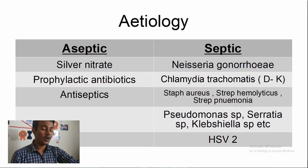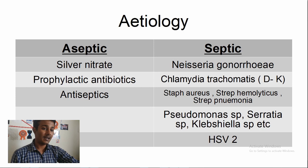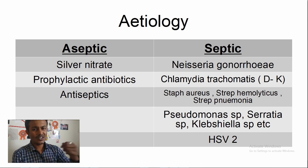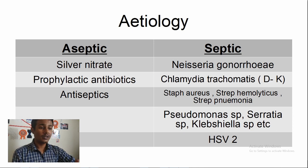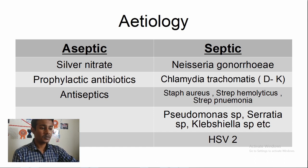Etiology: we have septic and aseptic causes. Aseptic gives us chemical ones — silver nitrate, antibiotics, and antiseptics. In the septic category, we have living organisms: Neisseria gonorrhea, Chlamydia trachomatis, Staphylococcus, Streptococcus, Pseudomonas, Klebsiella, and other normal bacteria. For viral causes, we only need to look at HSV-2 — Herpes Simplex Virus type 2.